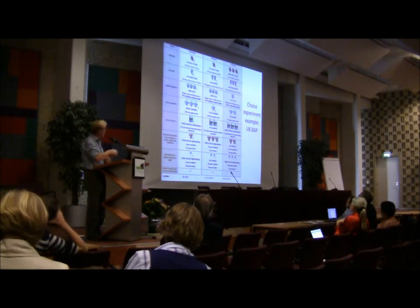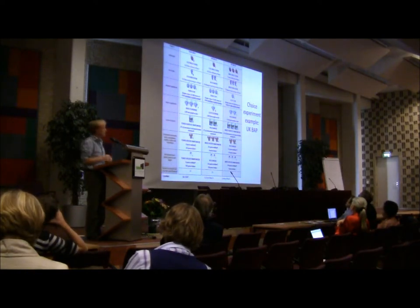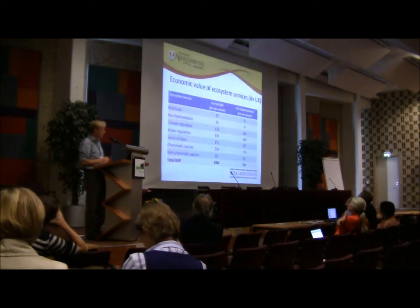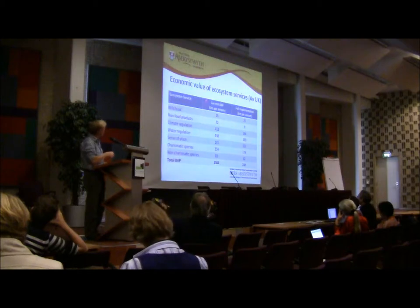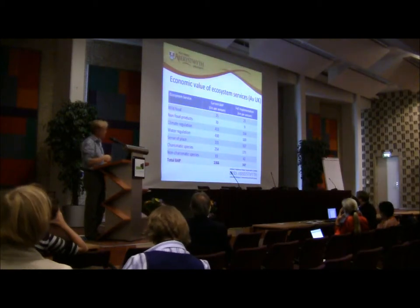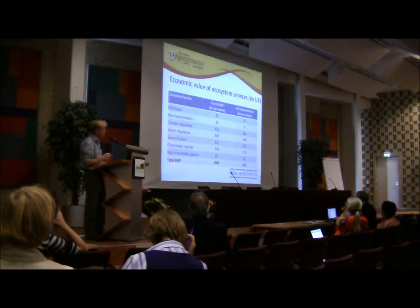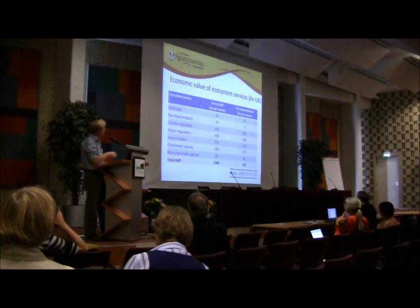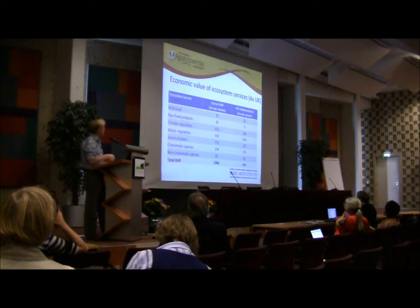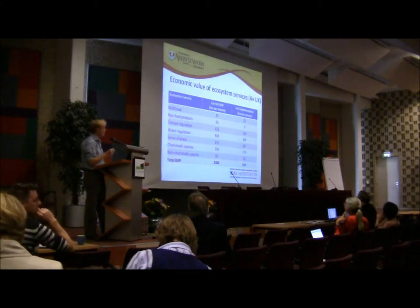These are usual choice experiments, kind of experimentally designed and allocated. Based on that assessment, the value of different services is shown here. Under the current scenario — what is currently being provided — water regulation and climate regulation were highest. And under full implementation, if we enhance the policy, these ecosystem services are the most valued.